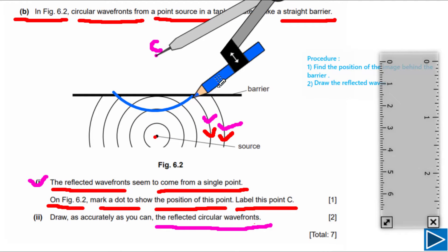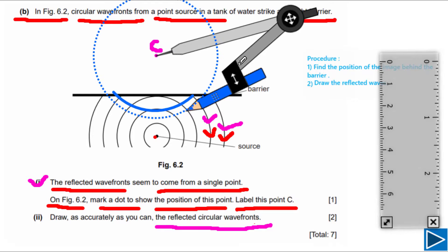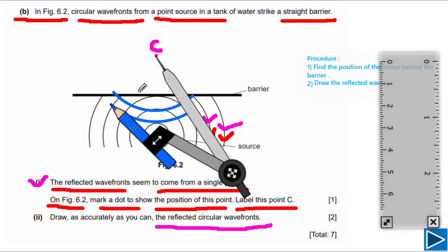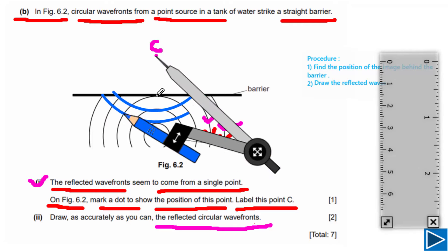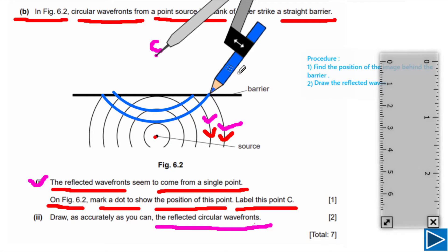Open the compass more and draw the next wave front. This is our second reflected wave front. This is how you need to draw these two reflected circular wave fronts.